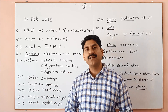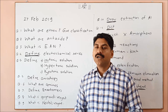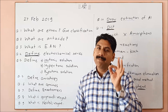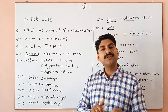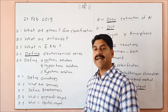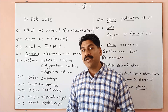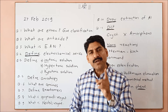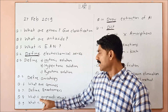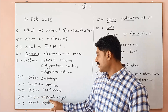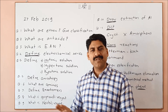Define enantiomers — this is section 2, optical activity. Definitions are the important points of optical activity. Key definitions include asymmetric carbon atom, enantiomers, dextro, levo-rotatory, racemic mixture, and optical activity.